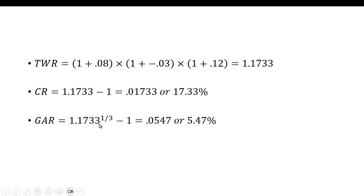We take the terminal wealth ratio, we raise it to the 1/3 power because we have 3 returns here, and we subtract 1, and we get 0.0547 or 5.47%. So you averaged 5.47% each year over these 3 years.